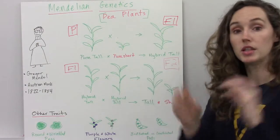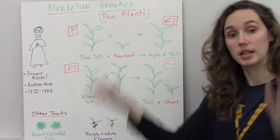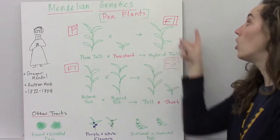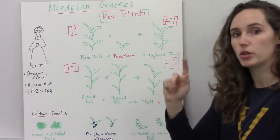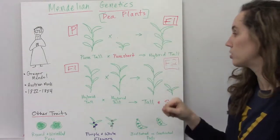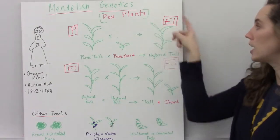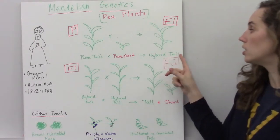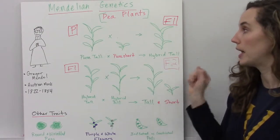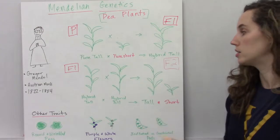The seeds that were produced and the plants that grew from those were all tall. The second generation is called the F1 generation. All members of the F1 generation were tall, but they were hybrids. They had genes from both parents.